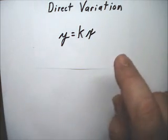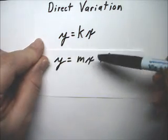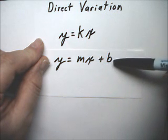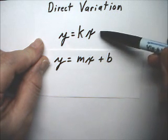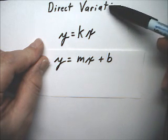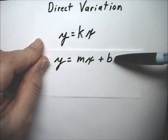Now, this is very similar to what we have here. The only difference, really, is there is no b. And that means that b is equal to 0. So for direct variation, it's a straight line equation. And it goes right through the point 0, 0.